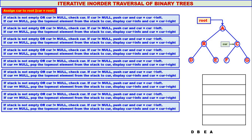Stack is not empty or curry not equal to null — stack has become empty but curry is not equal to null. Therefore we check curry. If curry is not equal to null, push curry — address of node C is pushed onto the stack. Curry moves to curry's left. There is a left child for C: F. So curry comes to F.